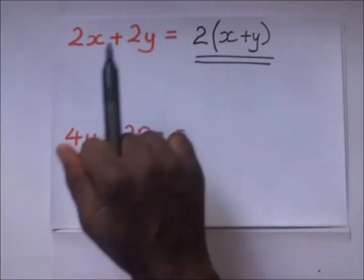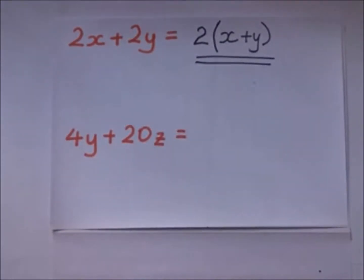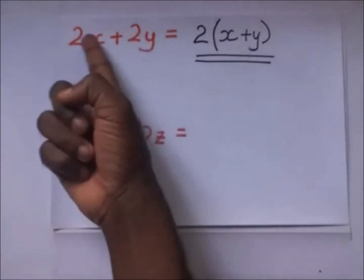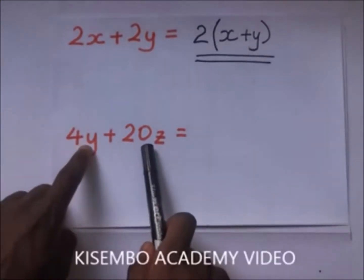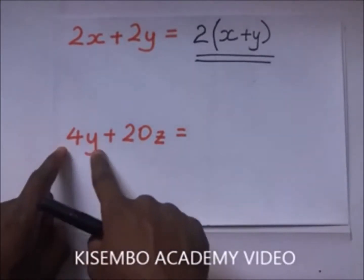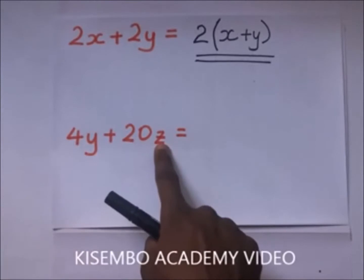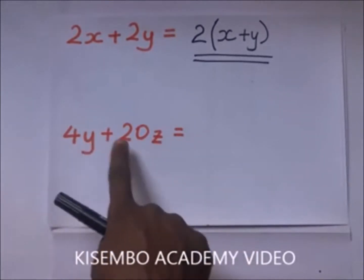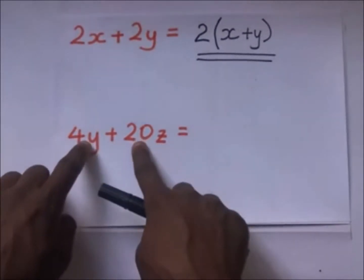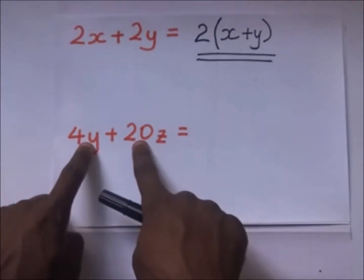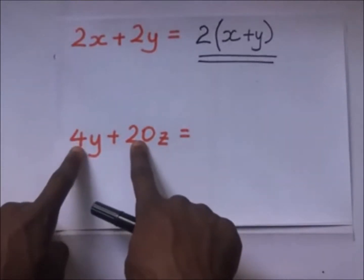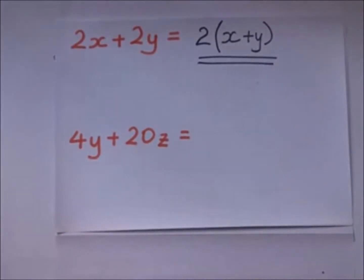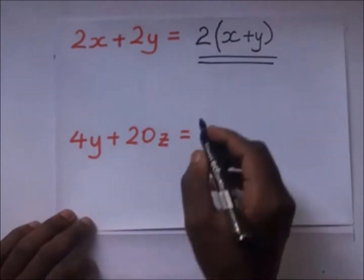Let's go on to this one. We have 4y and then 20z. The common factor between 4y and 20z: if you look at 20 and 4, the highest common factor between them is 4. So you put 4 outside the brackets.